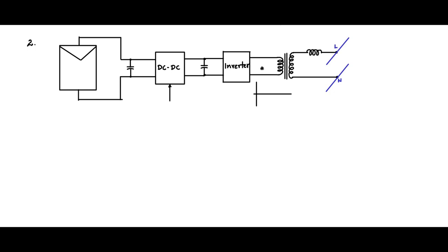If you look at the inverter output, it will be a switched AC waveform. If I draw the waveform versus time, you will see a pulse-width modulated switched waveform. The PWM waveform is switching at high frequency but the fundamental is 50 Hz, which when filtered by the inductor will give a filtered current — almost smooth at 50 Hz but with some switching harmonics.